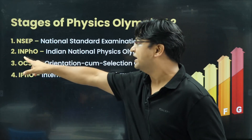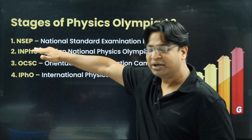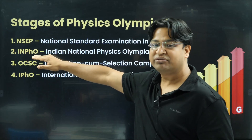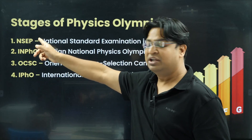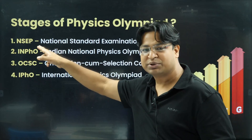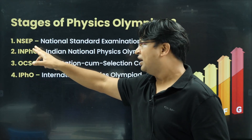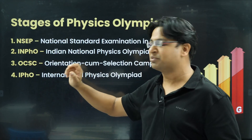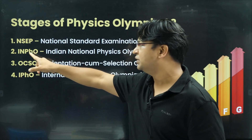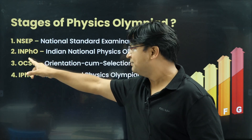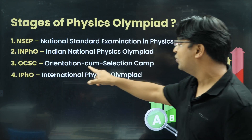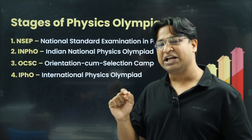The second stage is INPhO. NSEP happens in November, then two months later the INPhO exam happens, in which all 300 students who cleared NSEP participate. NSEP is objective in nature — about 60 questions in a two-hour period: 48 single-choice correct and 12 multiple-option correct. INPhO is a subjective paper. From the 300 students, around 30–35 are selected to attend the Orientation cum Selection Camp, held in Mumbai at HBCSC.